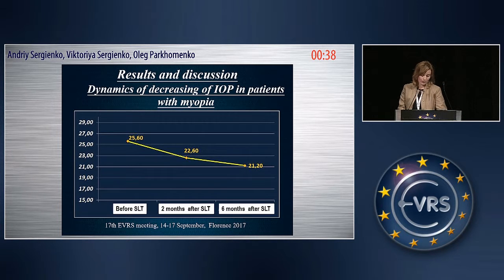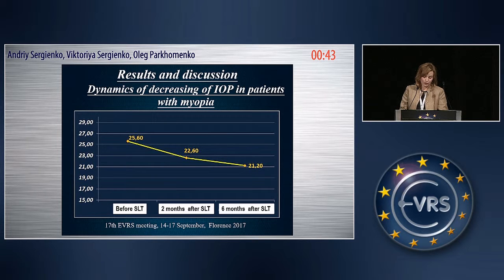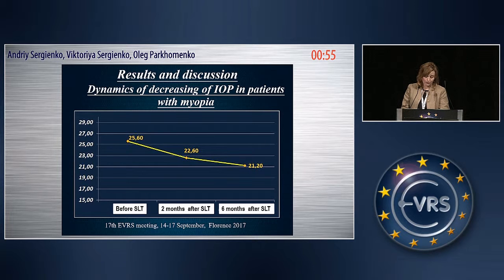After SLT in patients with high-degree myopia, a gradual decrease in intraocular pressure was noted during the entire follow-up period, as shown in Figure 1. Before the SLT, the mean intraocular pressure was around 25 mmHg. At two and six months after the trabeculoplasty, this value was equal to 22 and 20 mmHg respectively.